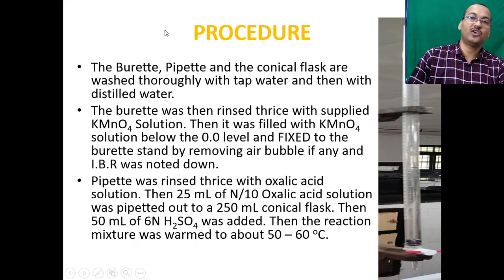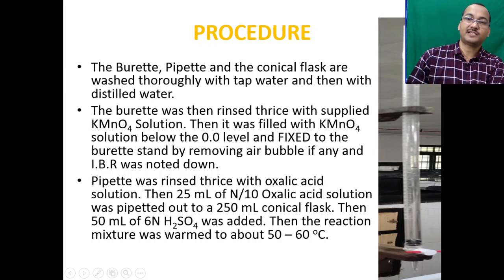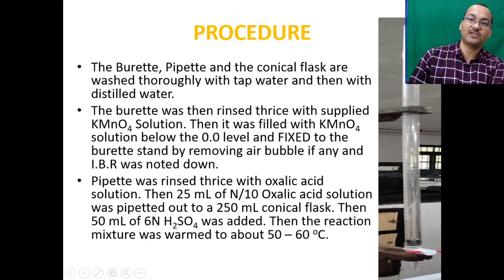For the procedure: wash the burette, pipette, and conical flask thoroughly with tap water and then distilled water. Rinse the burette thrice with KMnO₄ solution, then fill it just below the 0.0 level. The burette markings go from 0.0 to 50.0 mL. Fix it to the burette stand, remove any air bubbles, and note the initial burette reading at the lower meniscus.